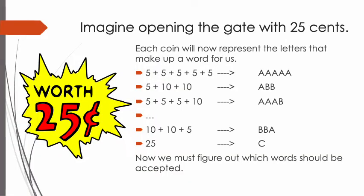Let's imagine you opened your gate with 25 cents. In this lesson, we will learn to turn every problem into a language problem. So every coin will now represent the letters that make up a word for us. For example, 5, 10, and 25 cent coins will turn into letters A, B, and C.